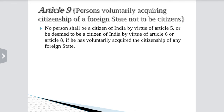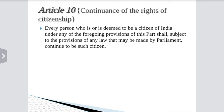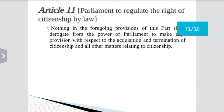Article 9 — persons voluntarily acquiring citizenship of a foreign state shall not be citizens of India. If a person from India acquires the citizenship of another country, he shall be deemed not to be a citizen of India. Article 10 — continuance of rights of citizenship: every person who is a citizen of India shall act according to the laws of the Indian Constitution. Article 11 — Parliament to regulate the right of citizenship by law, with respect to the acquisition and termination of citizenship and all matters relating to citizenship.